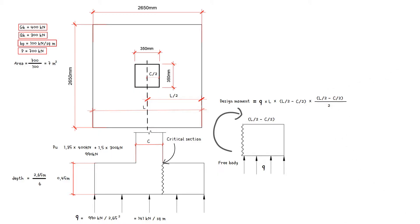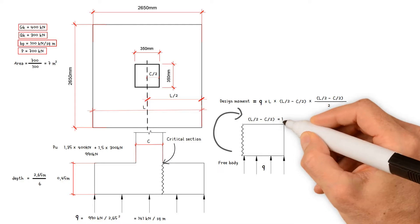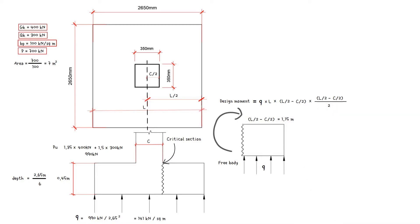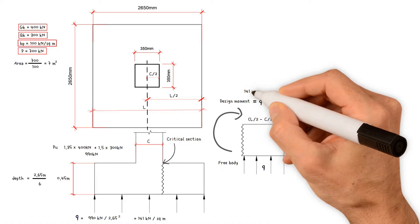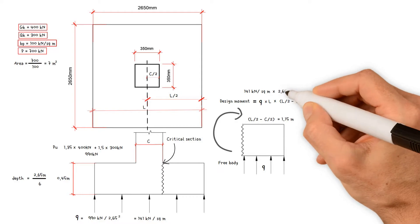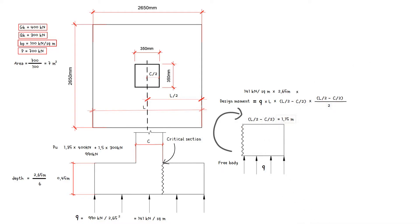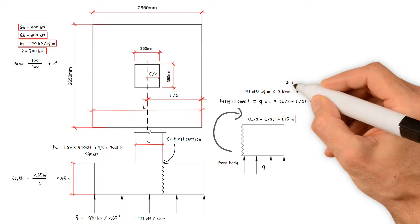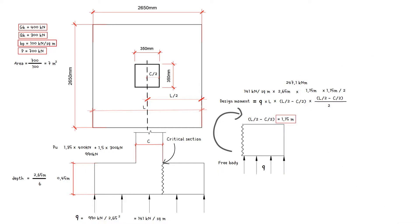Half the length minus half the column width equals 1.15 meters. As a result, the design moment is equal to the ground pressure of 141 kN per meter squared, multiplied by the length of the foundation 2.65 meters, multiplied by 1.15 times half of 1.15. This results in a value of 247.1 kN meter.